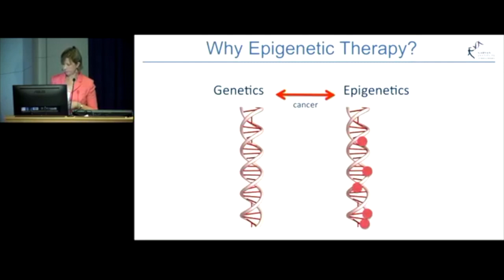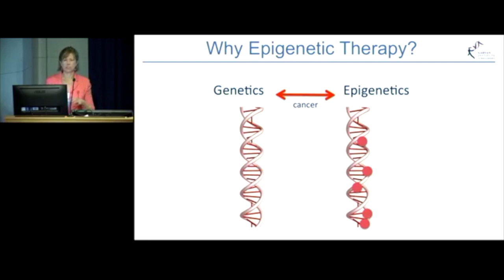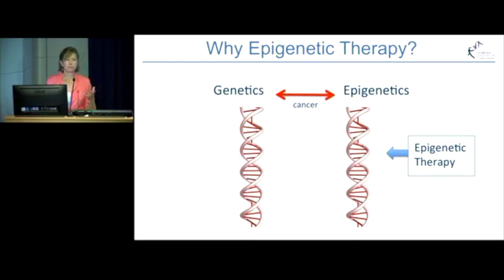Why are we particularly interested in epigenetic therapy? Cancer is a collaboration between our genetics and our epigenetics. We also know from our research over the last decade that many of the genetic mutations in cancer, in fact, affect the genes which control our epigenetics — so there's cross-talk between our genetics and our epigenetics. We know that we can't change our genetic patterns or these mutations, but epigenetics offers us the opportunity to modulate these changes. By epigenetic therapy, we hope to re-pattern the epigenome profile to a more normal cell-like state.